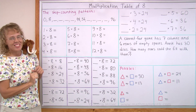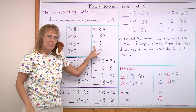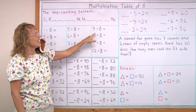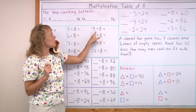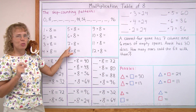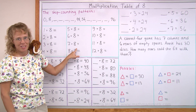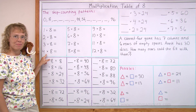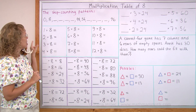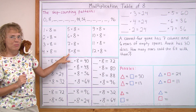Are you ready? Just say the answers as fast as you can. 6 times 8 — 48. 11 times 8 — 88. And 12 times 8 — 96. And 9 times 8 — 72. 5 times 8 — 40. 7 times 8 — do you remember the rhyme for 7 times 8? 5, 6, 7, 8 — 56 is 7 times 8. 4 times 8 — 32. 12 times 8 — 96. And 2 times 8 — 16. 8 times 8 — 64.